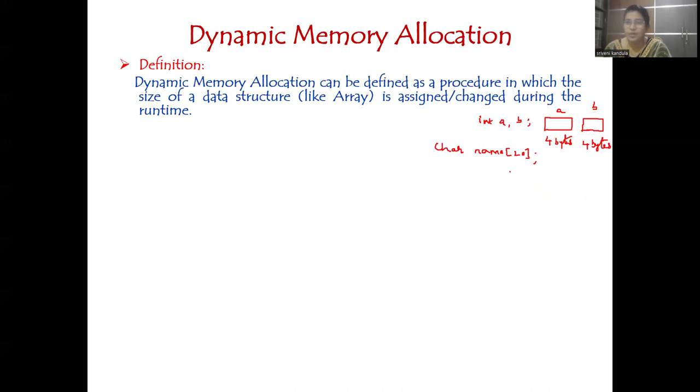Suppose I give my name, Sriveni. How many characters do I have in my name? Only seven characters. But I declared an array of size 20. This much memory is allocated, but I'm only using seven locations and remaining 13 bytes of memory is getting wasted. Since I'm not fixed on what input I'll supply, only seven bytes are utilized and the remaining bytes are wasted.